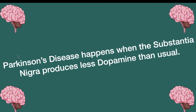Did you know that Parkinson's disease happens when the substantia nigra produces less dopamine than usual? Parkinson's disease is a neurodegenerative disease, which means a particular part of the brain loses the function or structure of its neurons. In this case, the neurons in the substantia nigra are going to die — that's how Parkinson's disease happens.